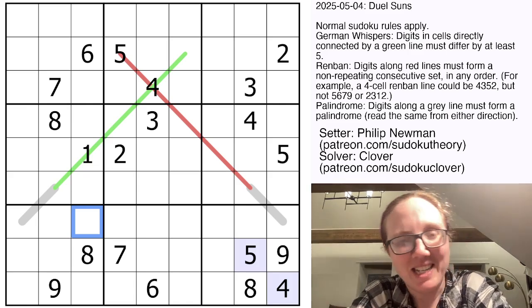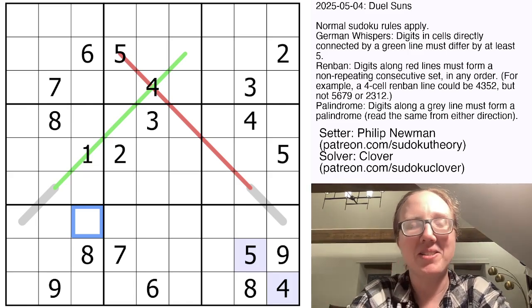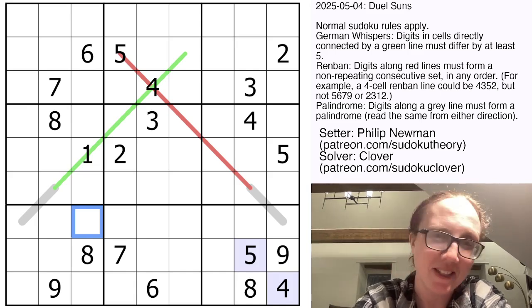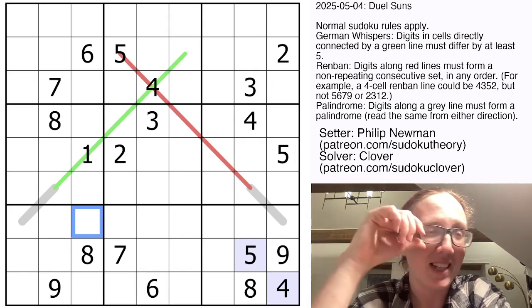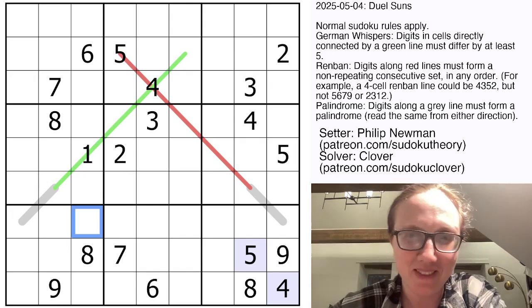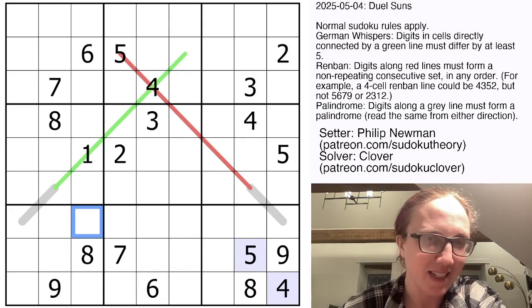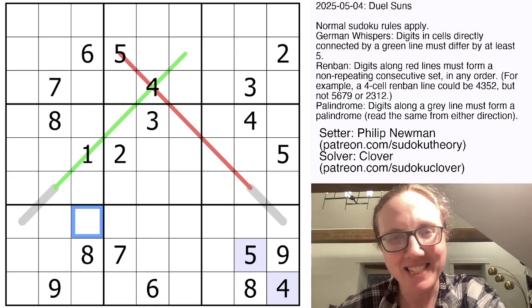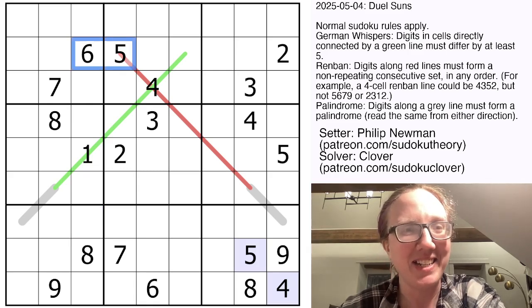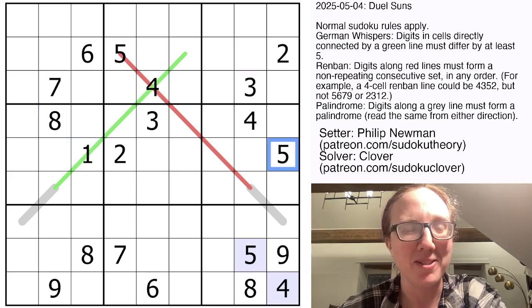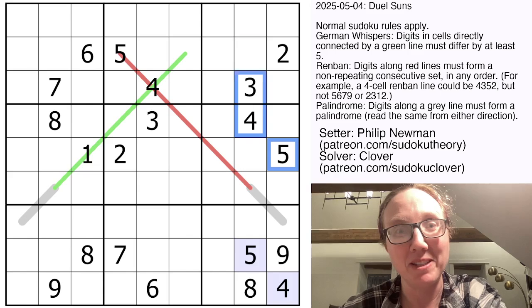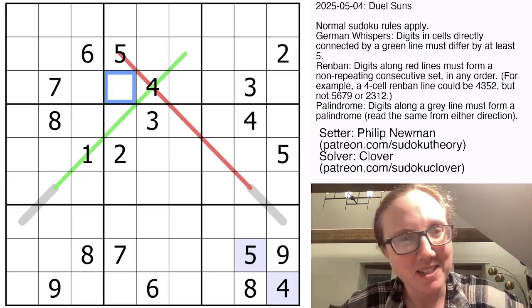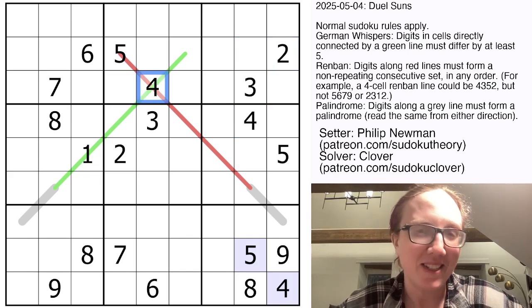The most visually obvious being the crossed lightsabers made of a German Whispers line and a Renbon line and two palindromes. But also, if you picked up on this, give yourself a pat on the back, the layout of givens here is a reference to Philip's infamous Sudoku, Tatooine Sunset, which is a classic that has been riffed on a number of times. This puzzle should be quite a bit more straightforward than that, but the iconic layout of givens here is a reference to that classic Sudoku, also by Philip, which itself is a reference to the Star Wars franchise.